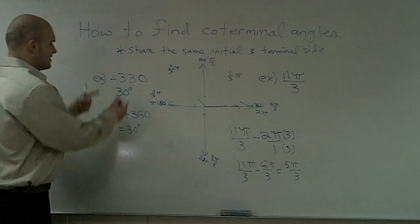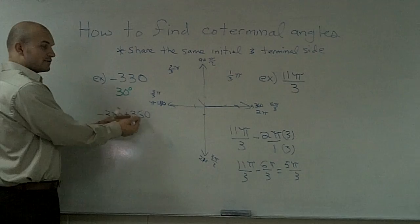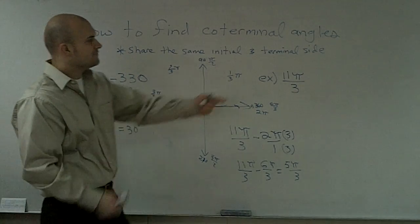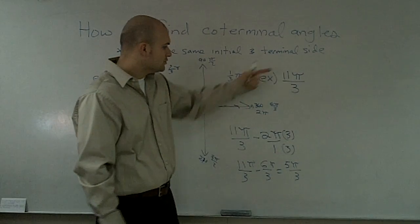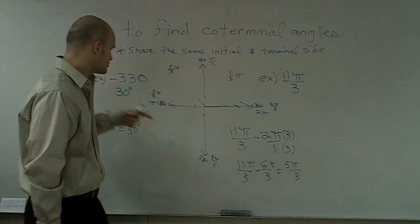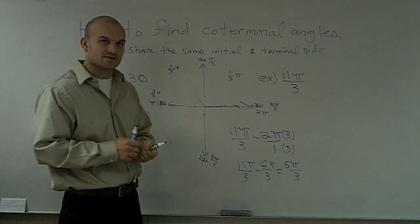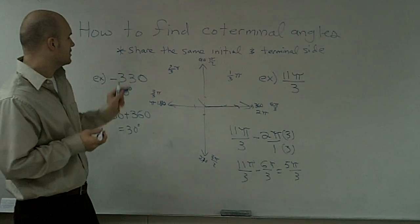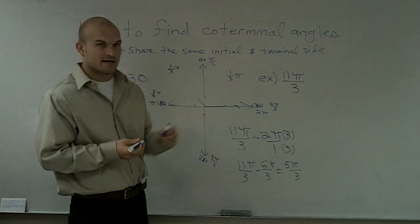If you guys can just remember, whenever you have a negative angle, you add 360 degrees or add 2 pi, depending on if it's a degree or radian. And if you have a positive angle to find the coterminal angle, you subtract 2 pi or subtract 360, depending on if it's a degree or radian. That's how you find the coterminal angles, given an angle in degrees and an angle in radians.